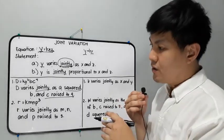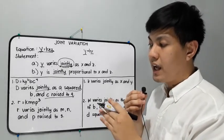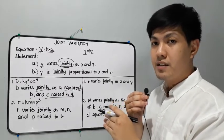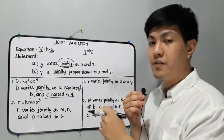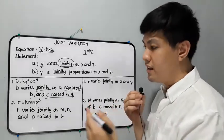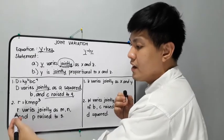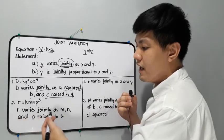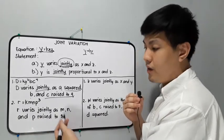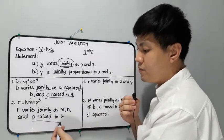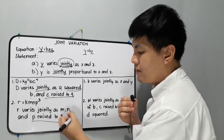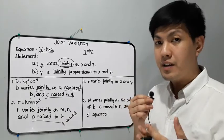Number 2: we have r is equal to k times m times n times p raised to 3. This is also an example of joint variation. Translated into a statement: 'r varies jointly as m, n, and p raised to 3.' We can also use 'p cubed' instead of 'p raised to 3.'